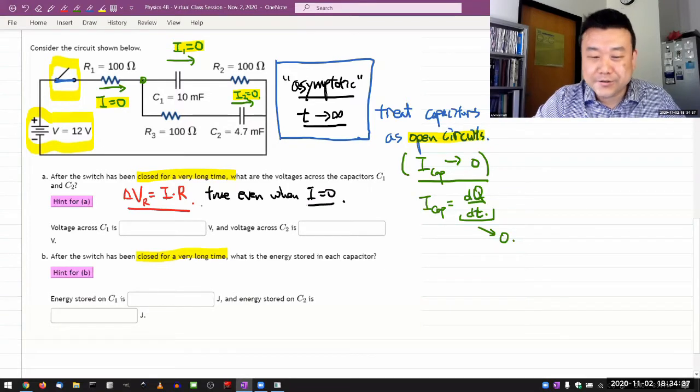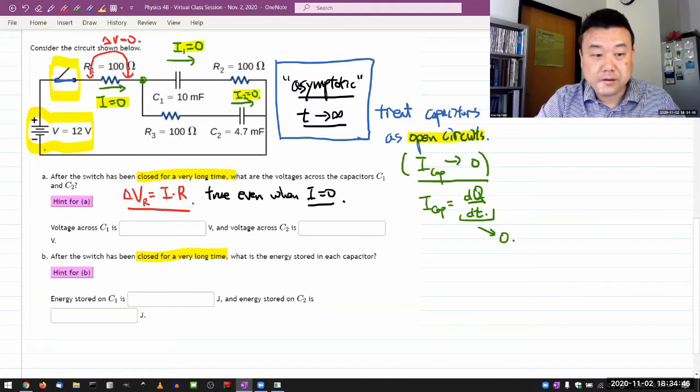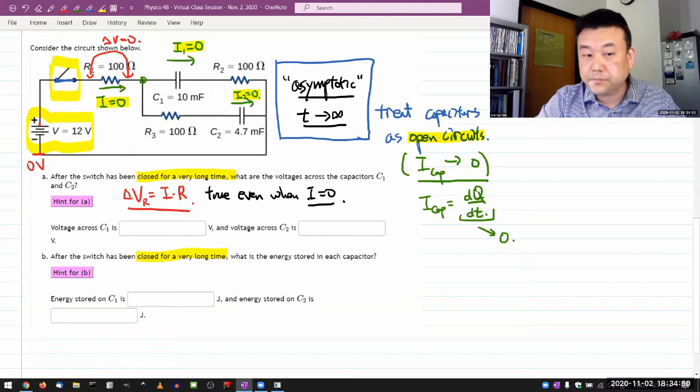Once you realize that, then what you realize here is that the voltage difference here is equal to zero. If we call this end zero volts and call this end plus 12 volts, then that plus 12 volts goes all the way here. This is plus 12 volts.